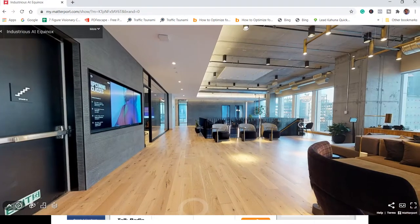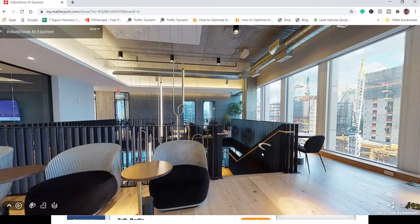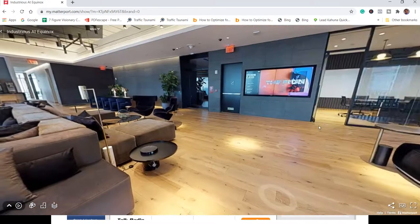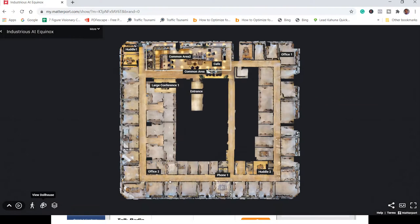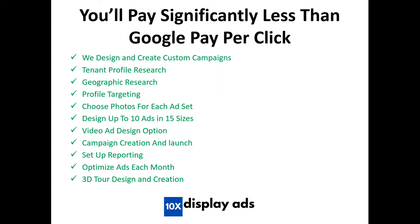Here's another one with a furnished space. You can walk through the entire space, go down to a lower level, walk around, and see what it looks like overhead — you get a lot of different perspectives and actual floor plans. As for cost, we include everything: the ad spend, the ad creation — each ad is a custom campaign. We do all the tenant profile research, geographic research, choose all the photos, and design up to 10 ads in 15 different sizes, creating 150 different ads.